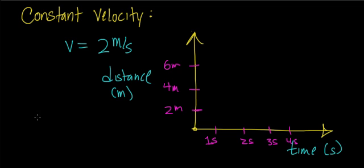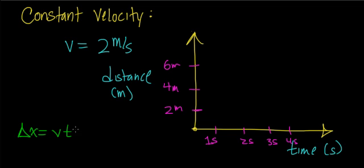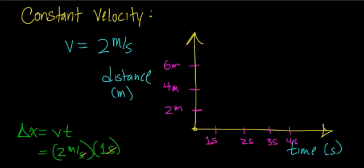Now, as a simple calculation, if I wanted to know how far this object has traveled in a specific period of time, I can use the equation: delta x, or the distance, equals velocity times time. So if I'm moving at 2 meters per second in a 1-second interval of time — notice the units of time cancel out — in 1 second, this object travels a distance of 2 meters. Looking at my graph, at 1 second, this object will have traveled 2 meters, so I'd make a dot right there.